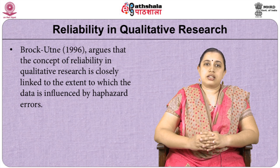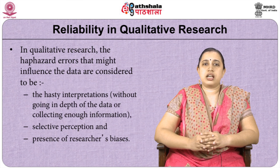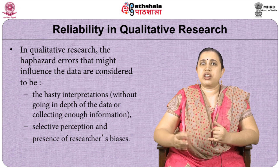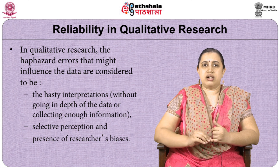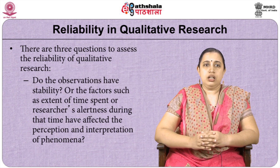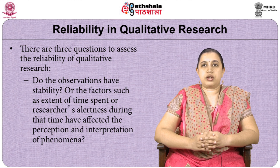Reliability in qualitative research. Brockhoon argues that the concept of reliability in qualitative research is closely linked to the extent to which the data is influenced by haphazard errors. In qualitative research, the haphazard errors that might influence the data are considered to be hasty interpretations without going in depth of the data, or collecting enough information before interpreting — that results in haphazard errors, selective perception and presence of researcher biases. There are three questions to assess the reliability of qualitative research. Do the observations have stability, or have factors such as the extent of time spent or the researcher's alertness during that time affected the perception and interpretation of the phenomenon?